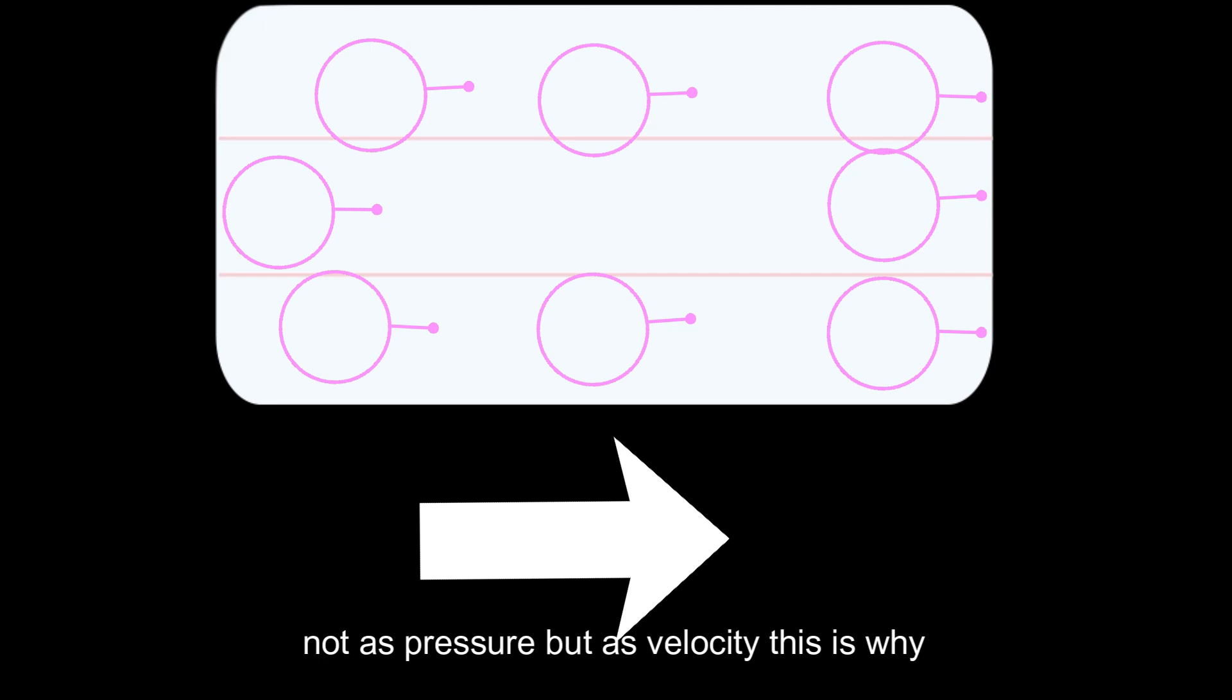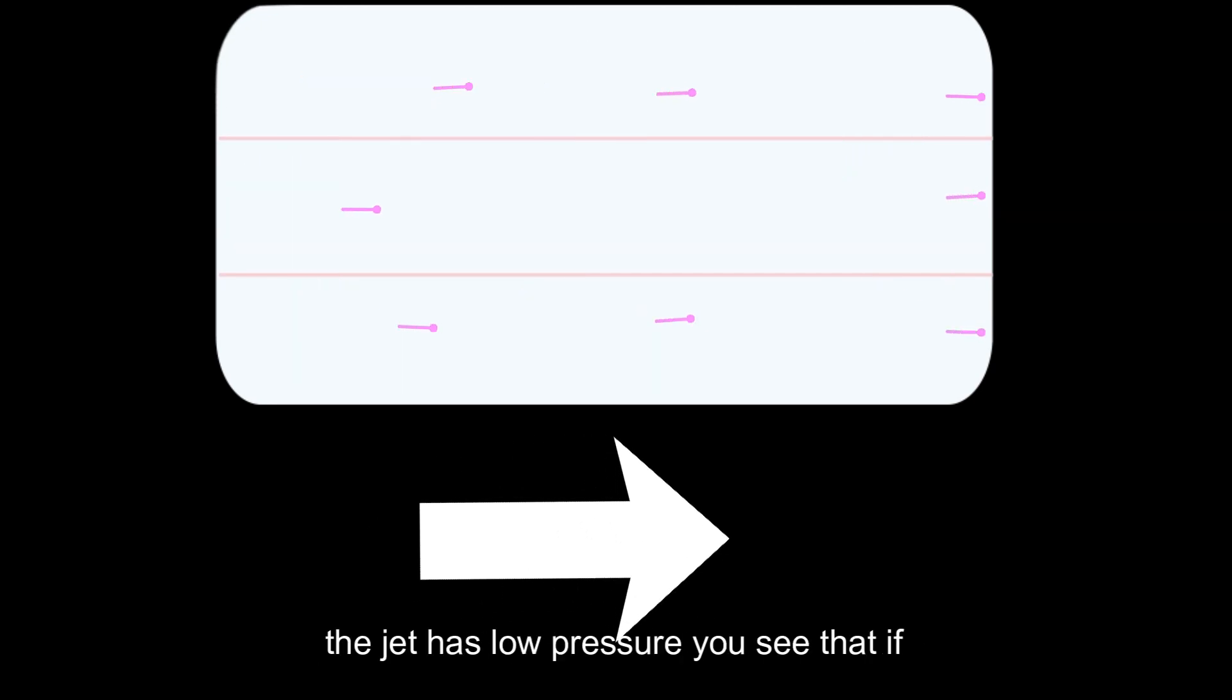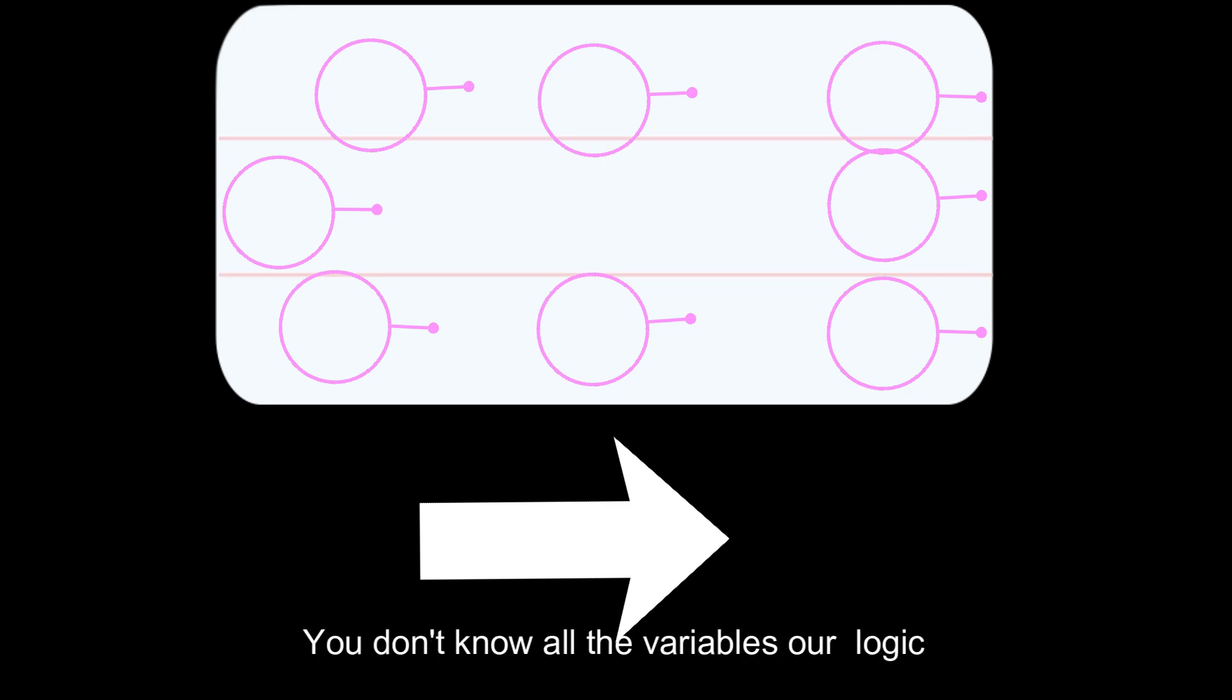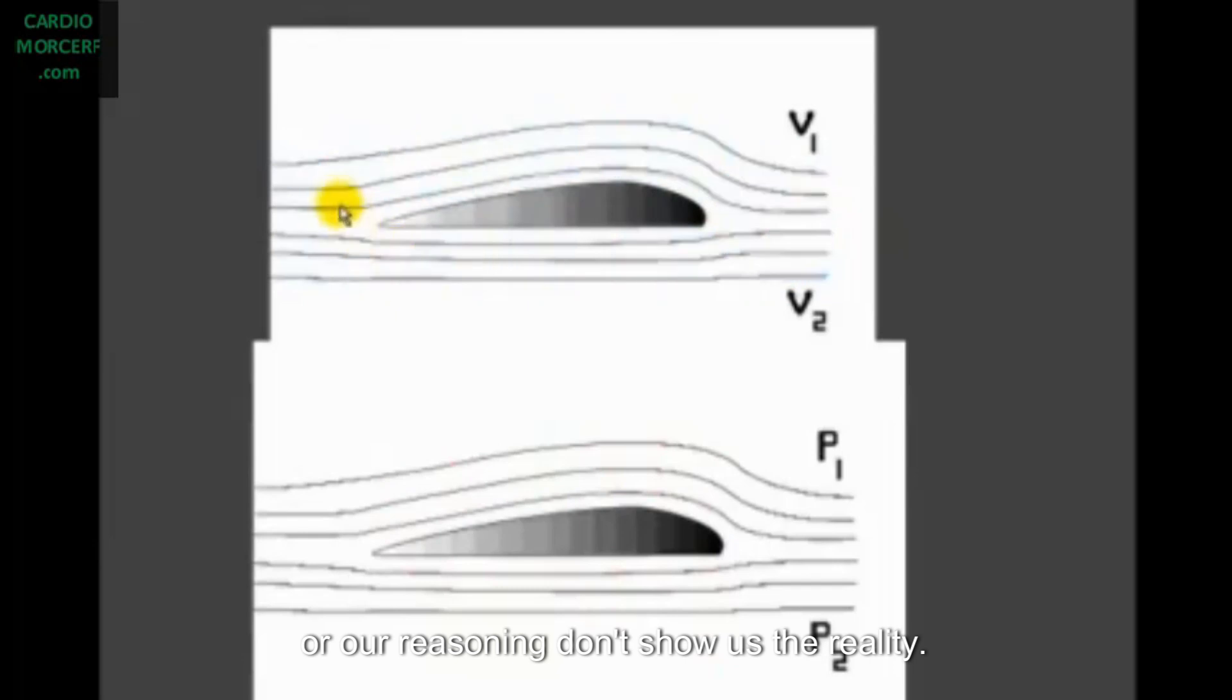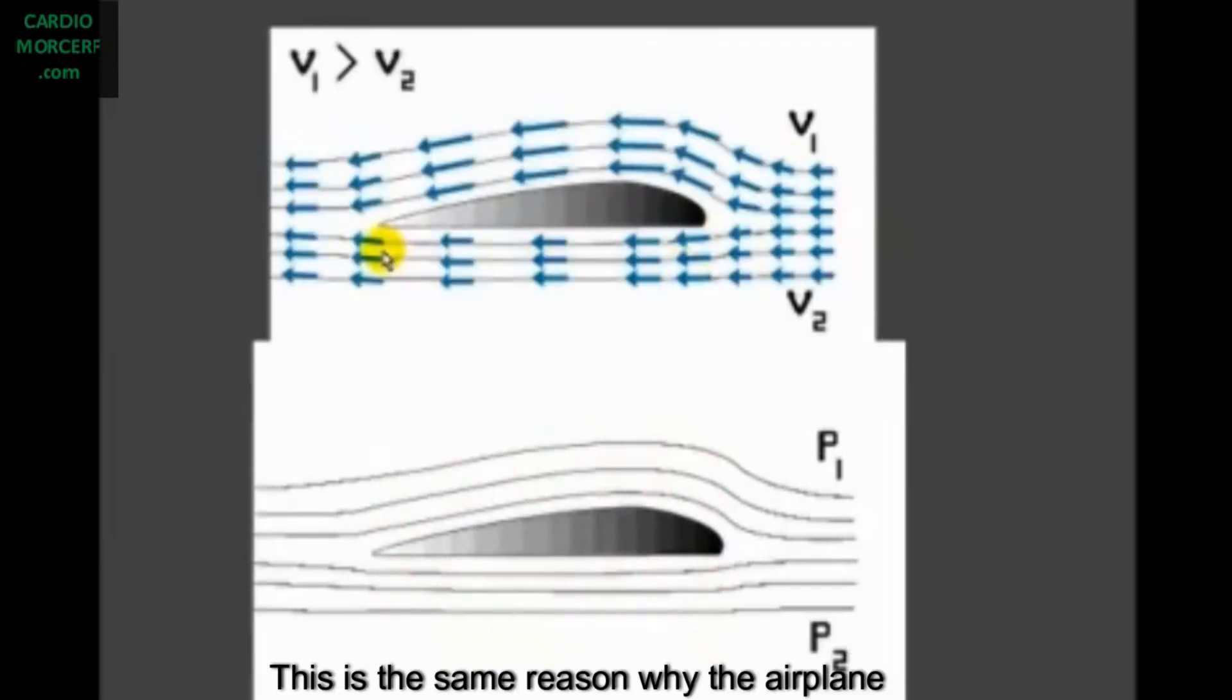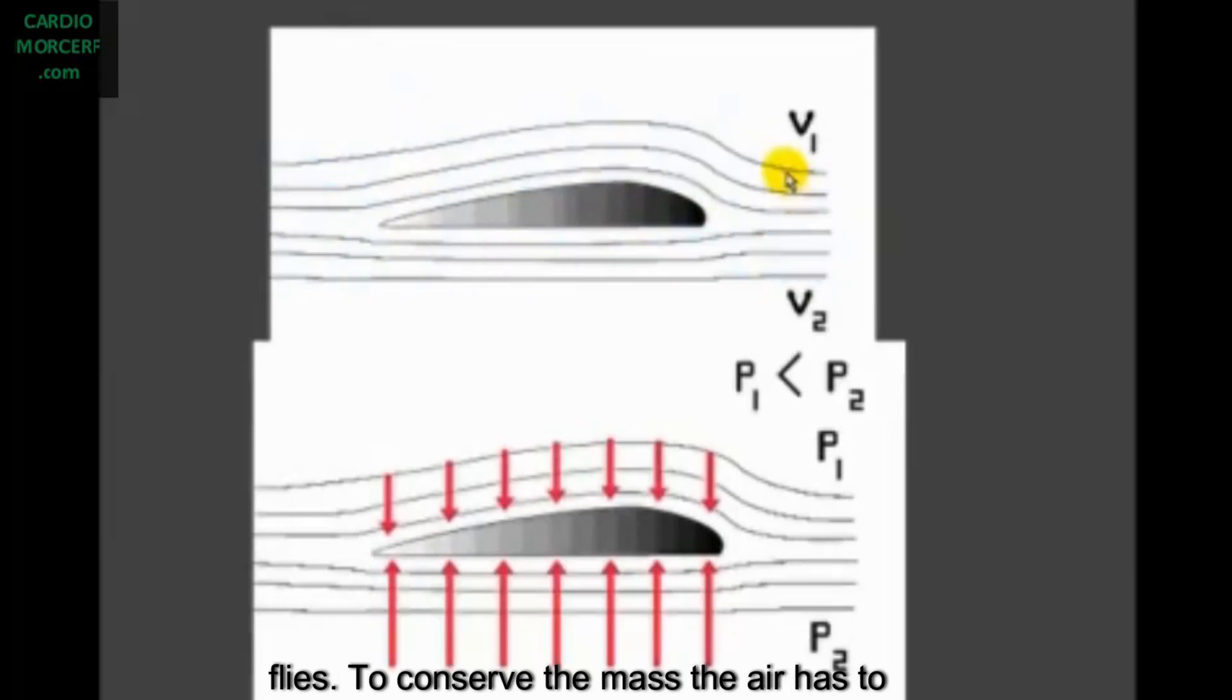And its energy now is not as pressure, but as velocity. This is why the jet has low pressure. You see that if you don't know all the variables, our logic or our reasoning don't show us the reality. This is the same reason why the airplane flies.